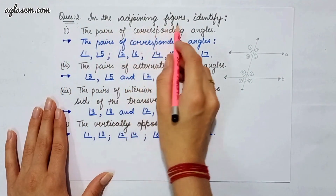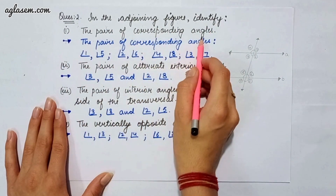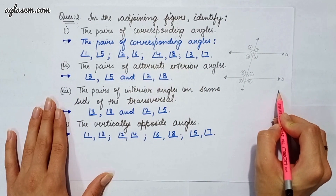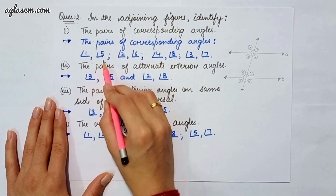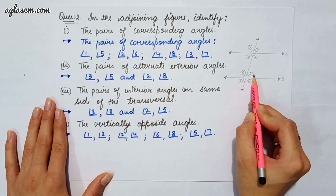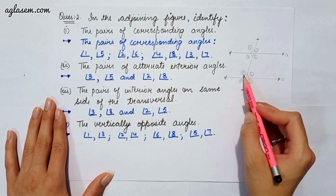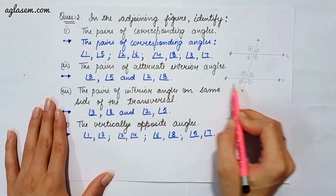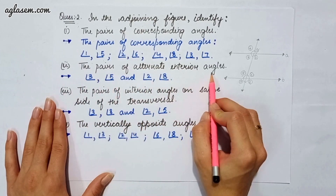Moving to question 2, which says: in the adjoining figure, identify the following. The first part asks for the pair of corresponding angles. The pairs are: angle 1 and angle 5, angle 2 and angle 6, angle 4 and angle 8, angle 3 and angle 7. The second part asks for the pair of alternate interior angles: angle 3 and angle 5, and angle 2 and angle 8.